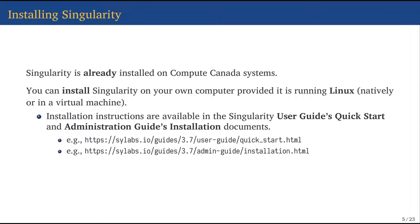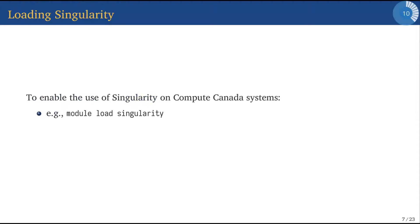If you need to install Singularity, you can install it on your own computer if and only if you're running Linux — either natively or in a virtual machine. I haven't tried installing Singularity in Windows Subsystem for Linux yet; it might work, but if it doesn't, you'll need to install a virtual machine like VirtualBox with Linux. To load Singularity on our clusters, you just run 'module load singularity' and it loads the latest version available.